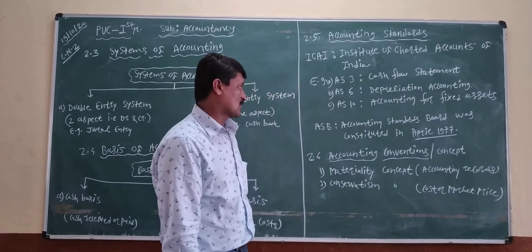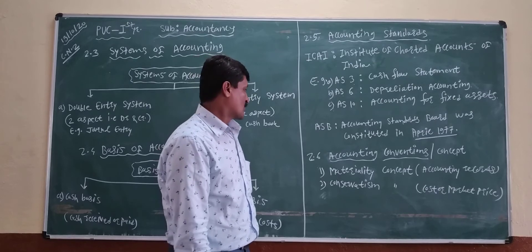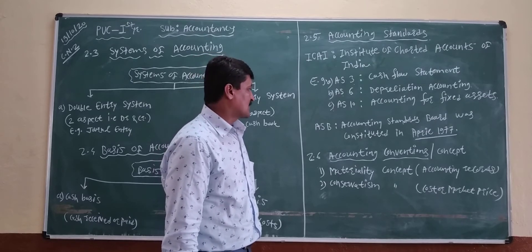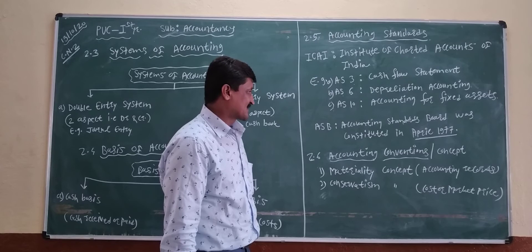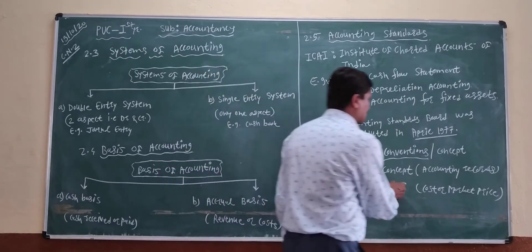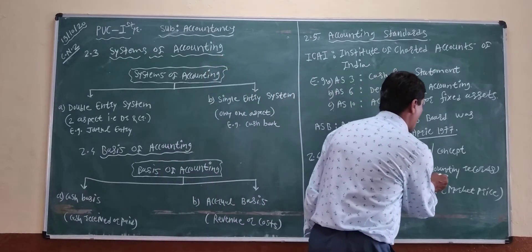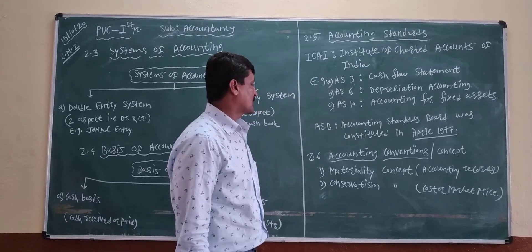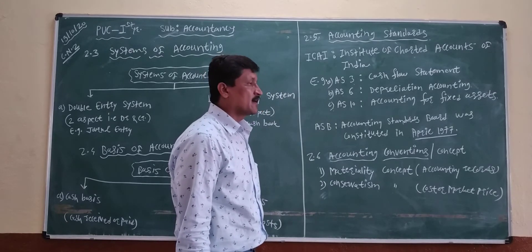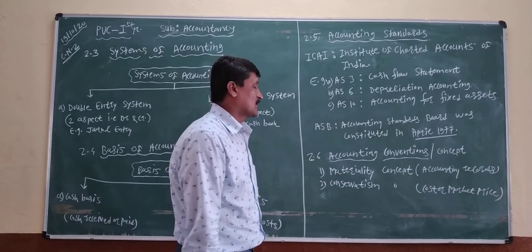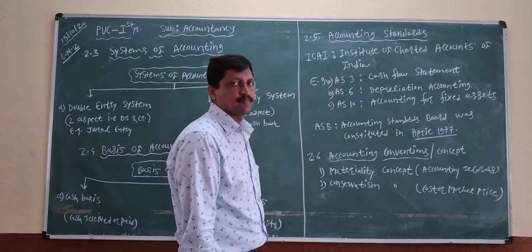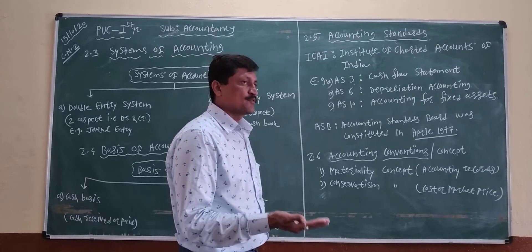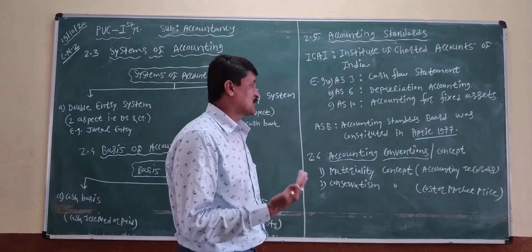Next is 2.6: Accounting Conventions and Concepts. Materiality concepts and conservation concepts — these are related to accounting records. Accounting records are recorded on the material basis. Materiality concept governs how transactions are recorded in accounting.